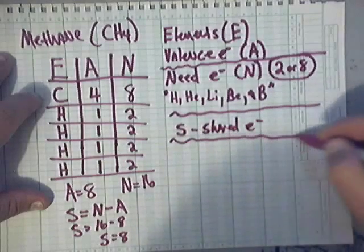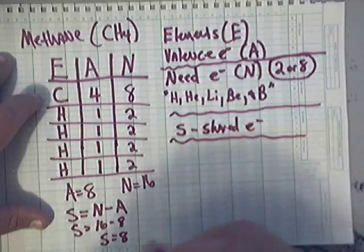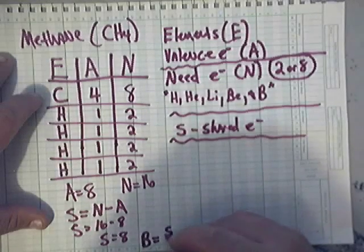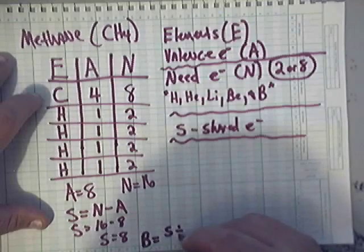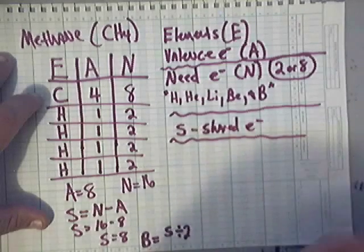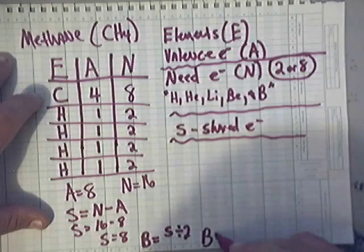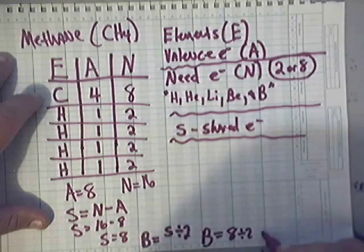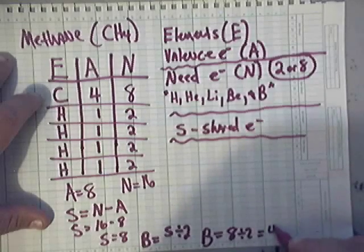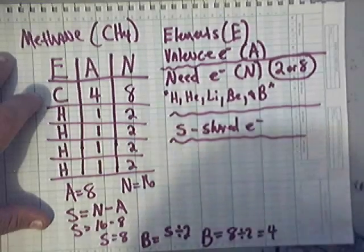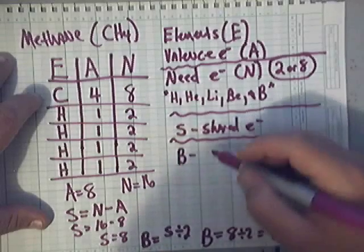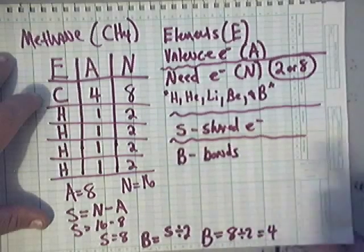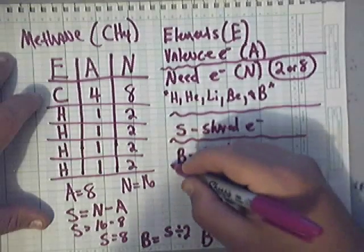Now, the next thing that we need to calculate is bonds. To calculate the number of bonds, bonds will equal the S divided by 2. So basically, we have bonds equals 8 divided by 2, which is, that's right, you guessed it, 4. So that means that we've got four bonds. So B means bonds. Now, when you calculate bonds, that just means the number of straight lines that you draw.